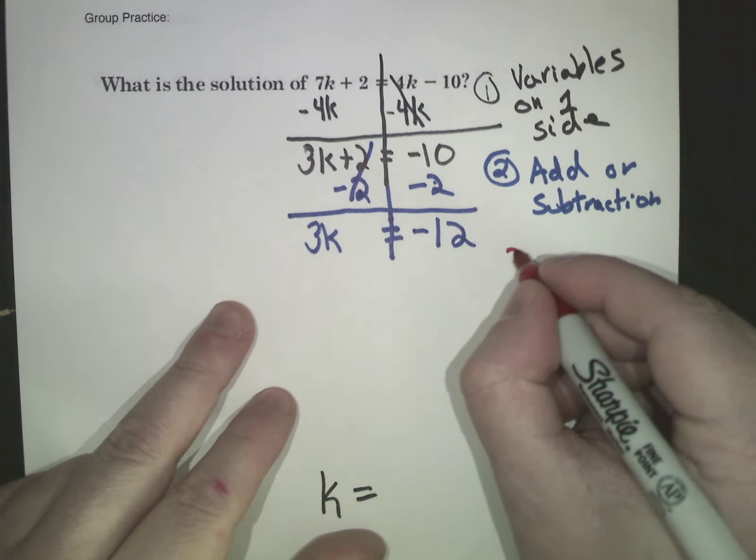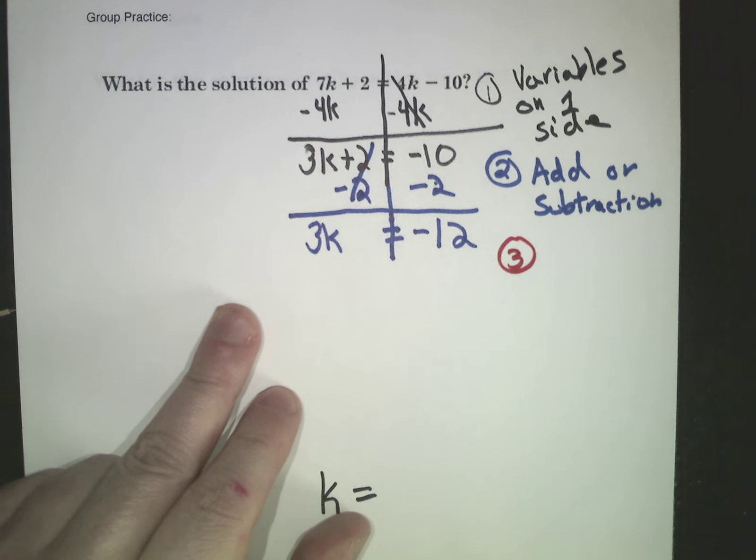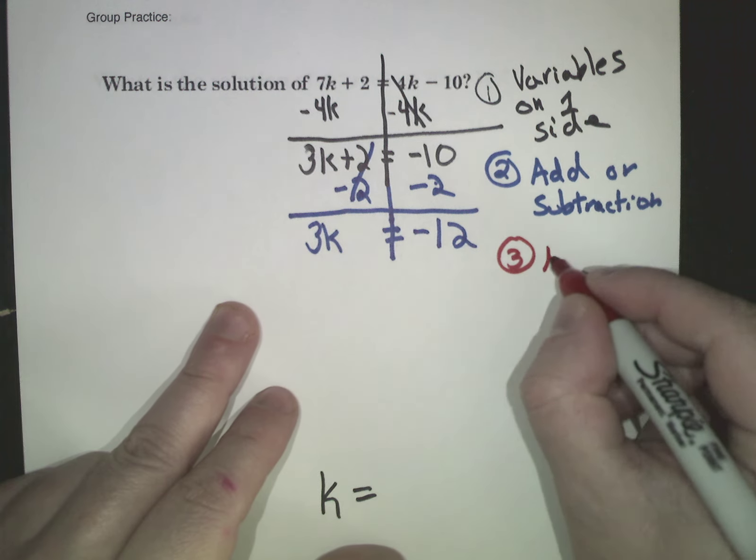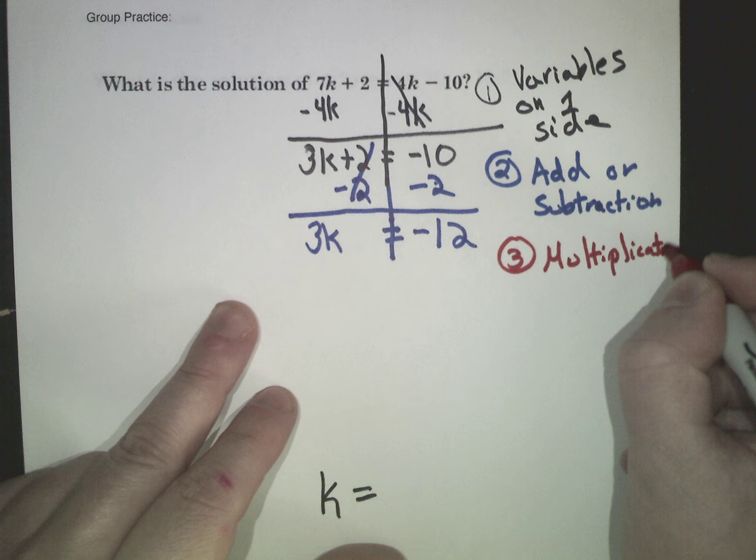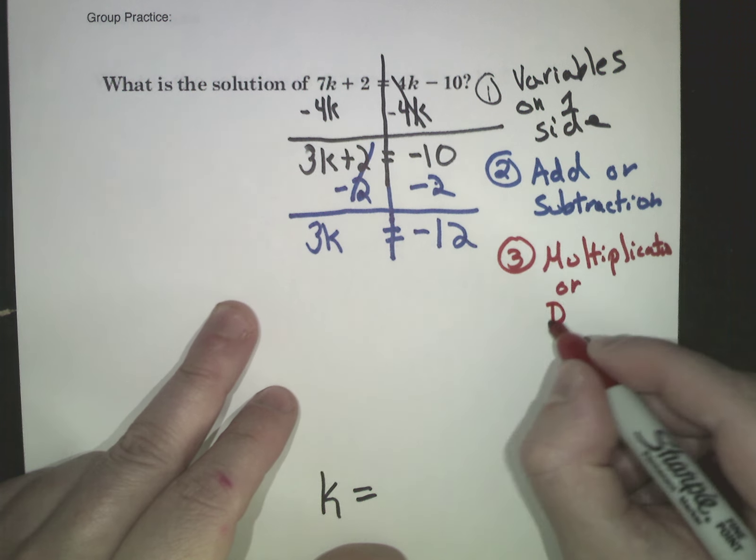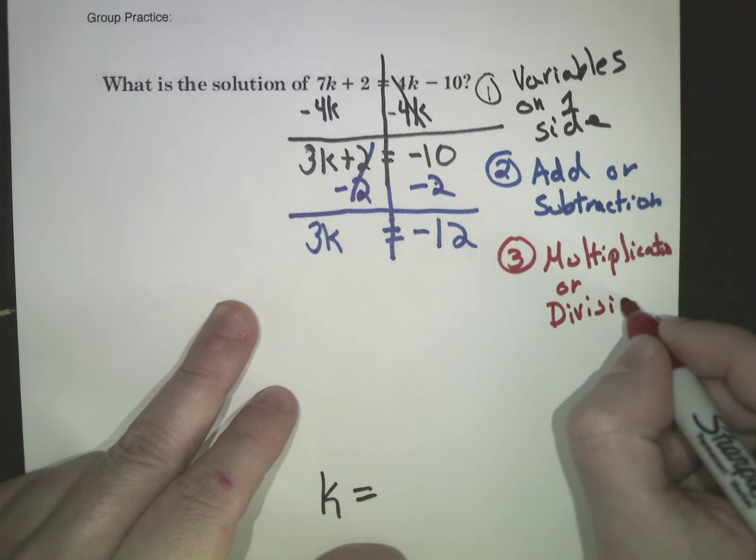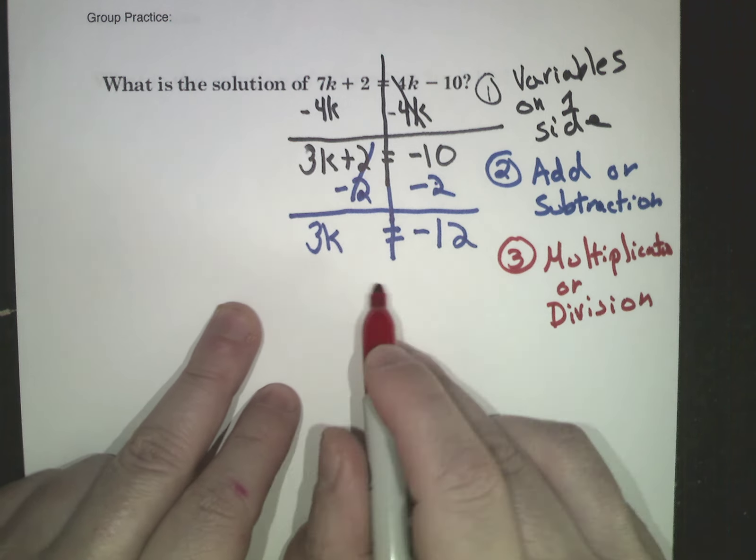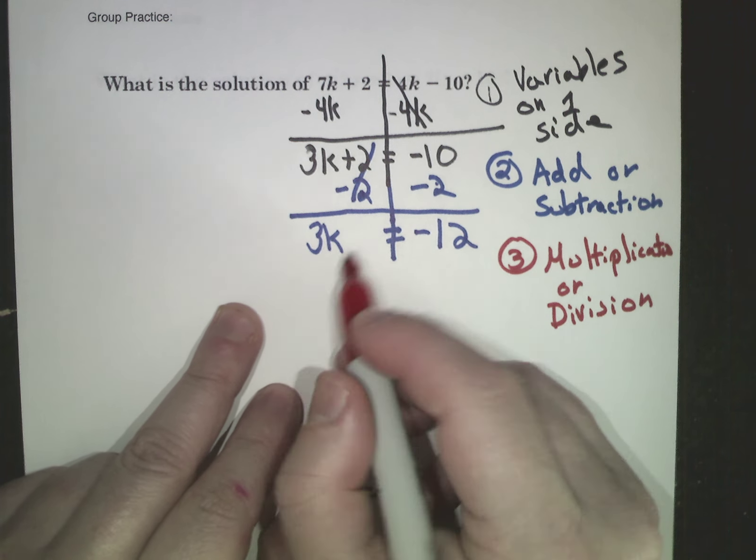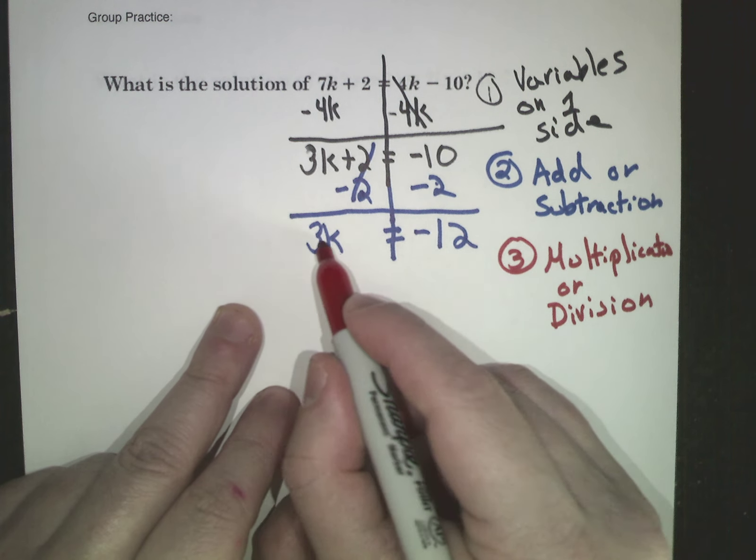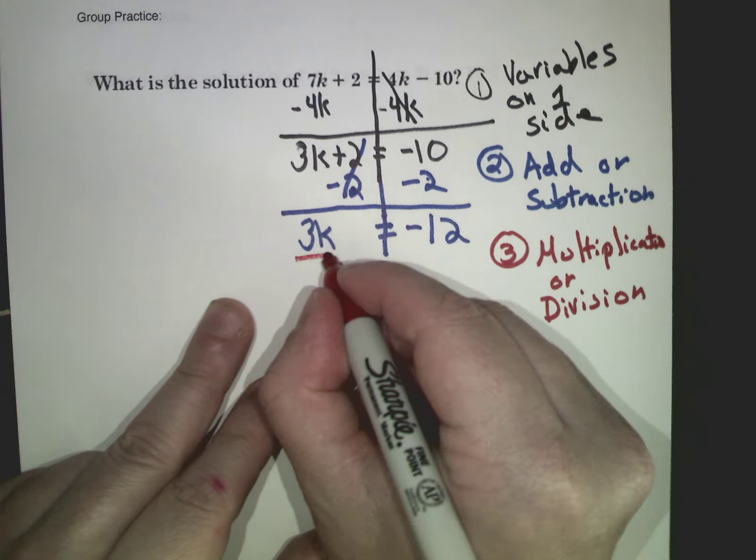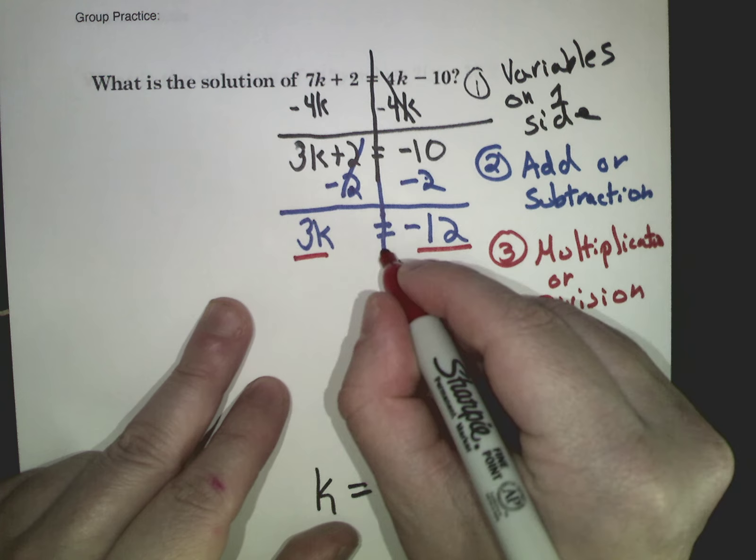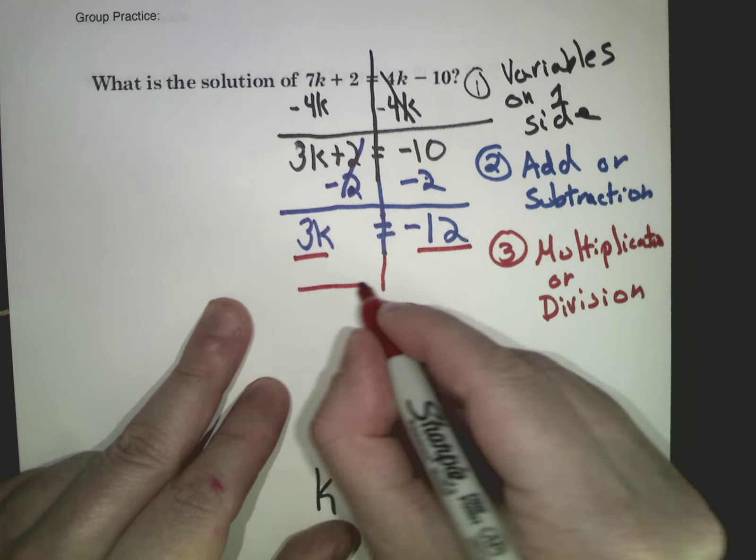Step 3. Multiplication or division. Well, that's all I got here. I have 3k, which really means 3 times k equals negative 12. So the opposite of multiplication is division.